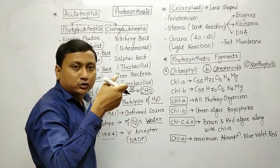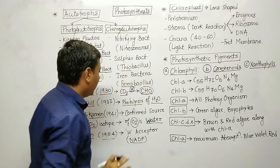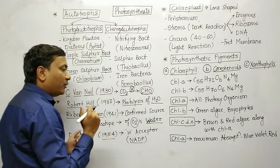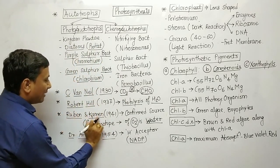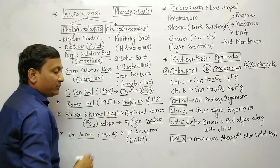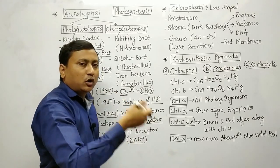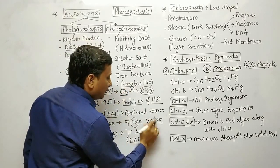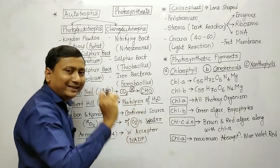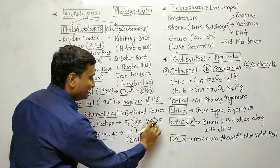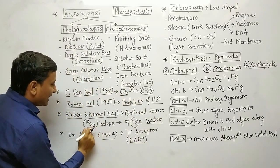There was an unknown hydrogen acceptor compound. In 1941, it was confirmed that in photosynthesis, the oxygen molecule comes from water — meaning the source of oxygen in photosynthesis is water. To confirm this, the isotope of oxygen was used.